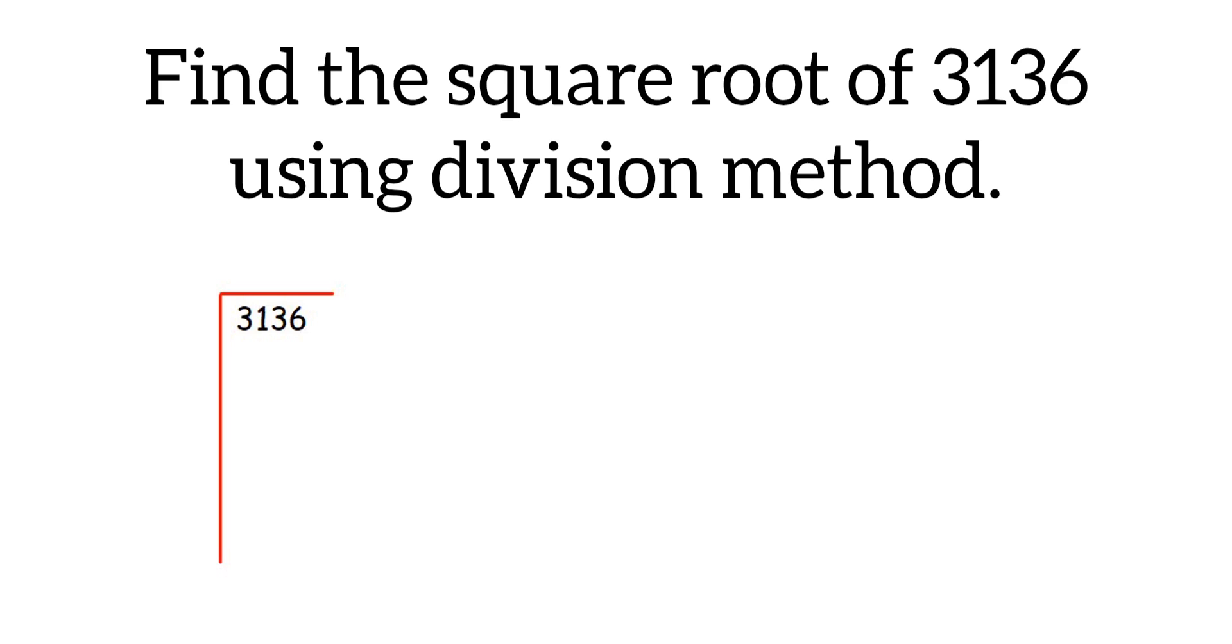So here we have 3136. First step to find the square root using long division method is to start pairing up the number from the right side. 36 will form one pair, 31 will form another pair.